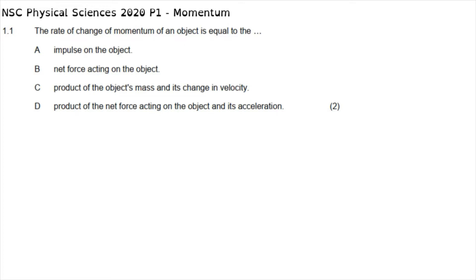The momentum section of the 2020 physics paper starts with question 1.1 of multiple choice, which reads: the rate of change of momentum of an object is equal to the... The rate of change of momentum deals with the impulse formula, which can be written as F_net times delta t equals the change in momentum, or as F_net equals delta p over delta t.